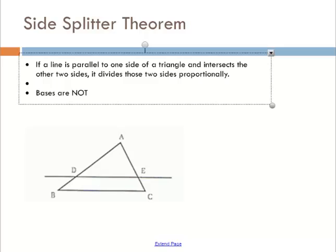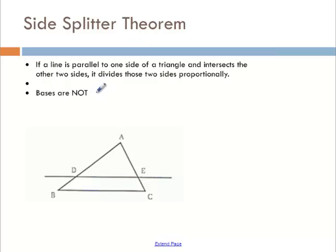We're going to have a theorem called side splitter theorem. Side splitter theorem basically means I'm going to split the two sides with a parallel line. If a line is parallel to one side of the triangle and intersects, it divides the two sides proportionally. The bases are not the same proportion.